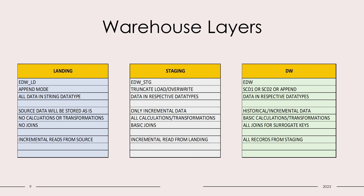In landing we will keep all the data in string data type — that is to keep the data as-is from the source. In staging we will be manipulating the data and keeping them with the respective data types in which we want to load them in the final layer. The DW will have the data in their respective data types.